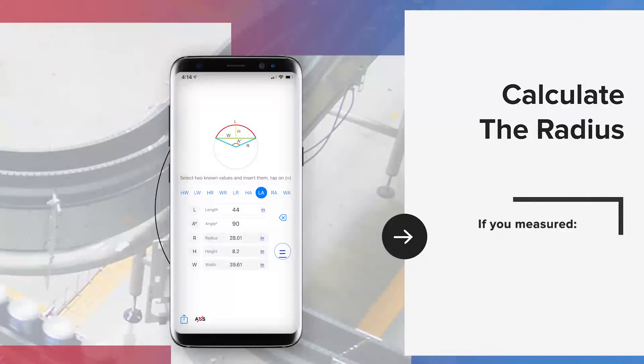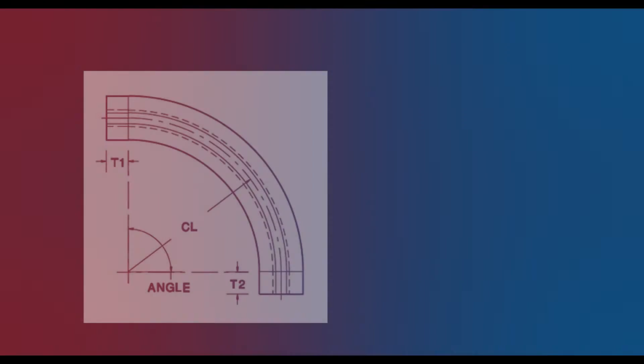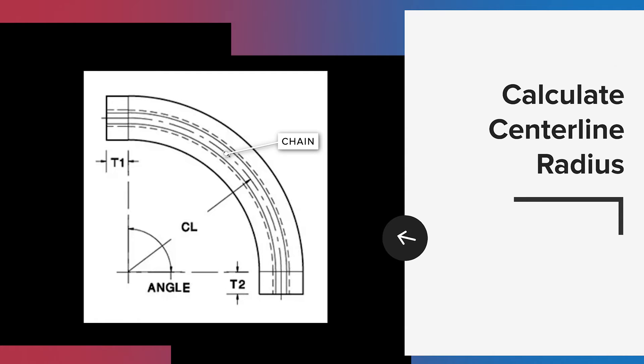For instance, if you measured arc length, angle, and chord length, put only the arc length and angle in the calculator. Look at the results to see if the chord length calculation matches what you physically measured. Keep in mind that you may need to round to the nearest number.